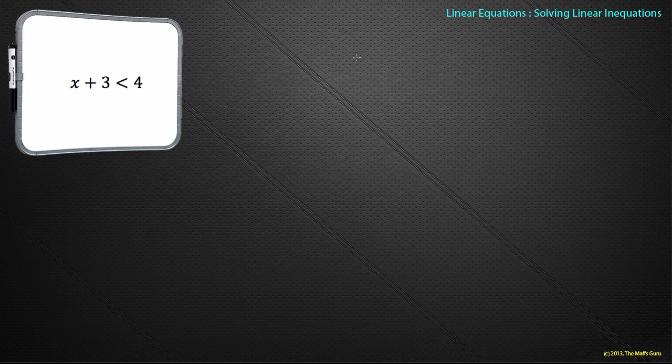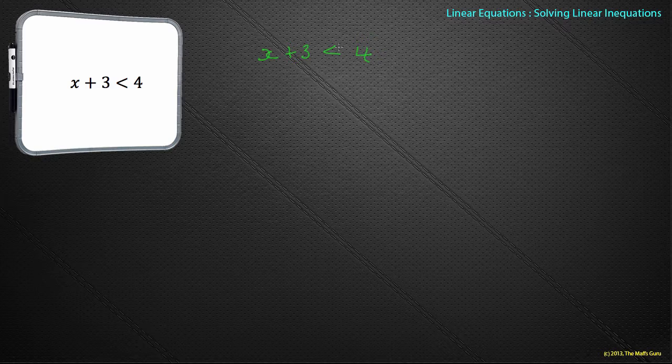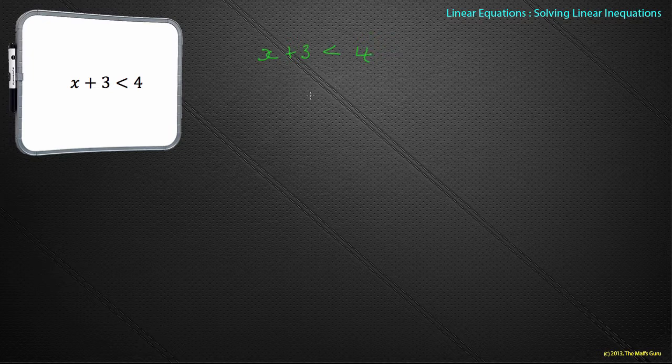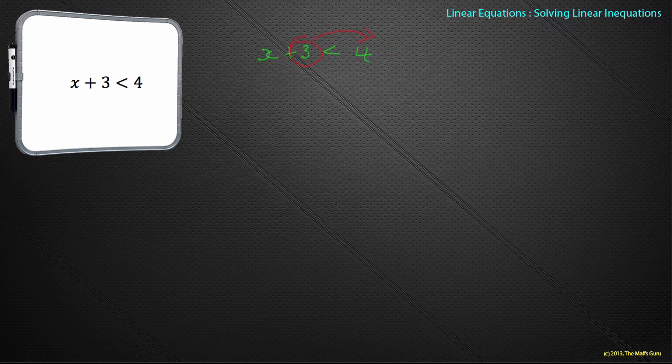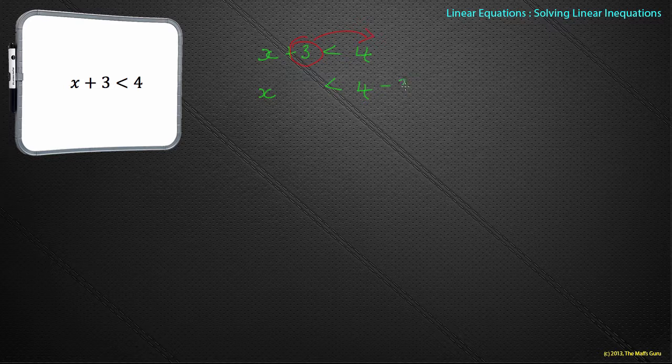Just a nice simple example first: x plus 3 is less than 4. When I teach in my classroom how to solve these, I say think of this as an equal sign. The same idea tends to work. We have the plus 3 that we want on a different side. We want the x on its own. So when we move it, the x stays there, we have less than, and the 4 stays there, and that becomes minus 3. So my answer becomes x is less than 1.